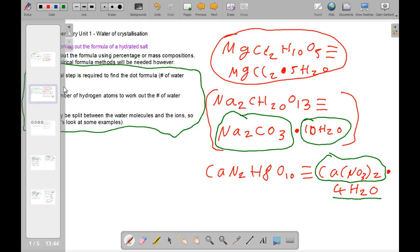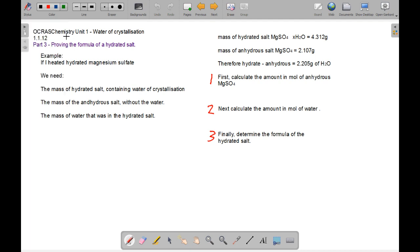Now we'll move on to part three, proving the formula of a hydrated salt. So if I heated hydrated magnesium sulphate, which is MgSO4, we need three things. One, mass of the hydrated salt containing water as a crystallization. Two, the mass of the anhydrous salt without the water. And the mass of the water that was in the hydrated salt.